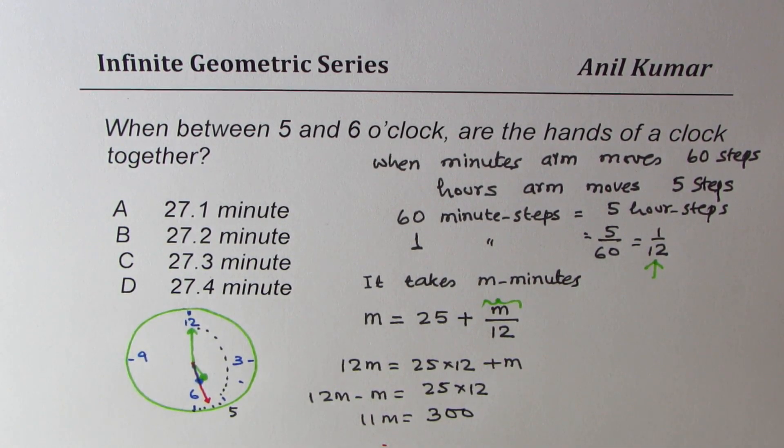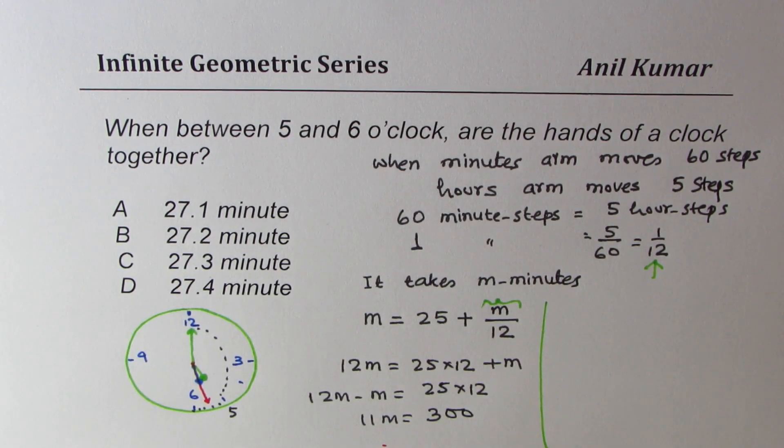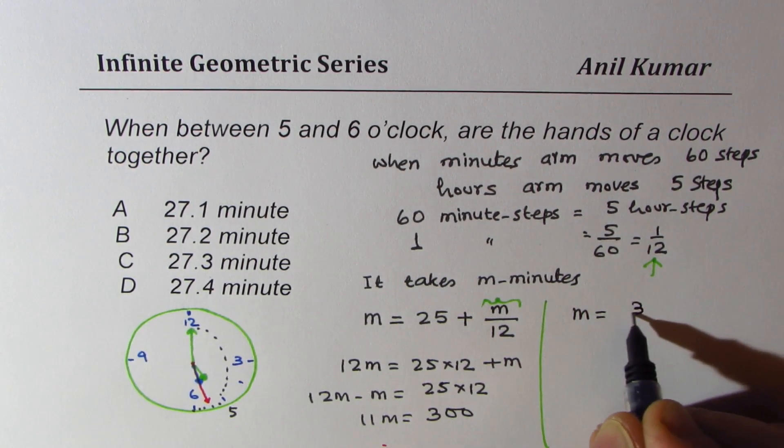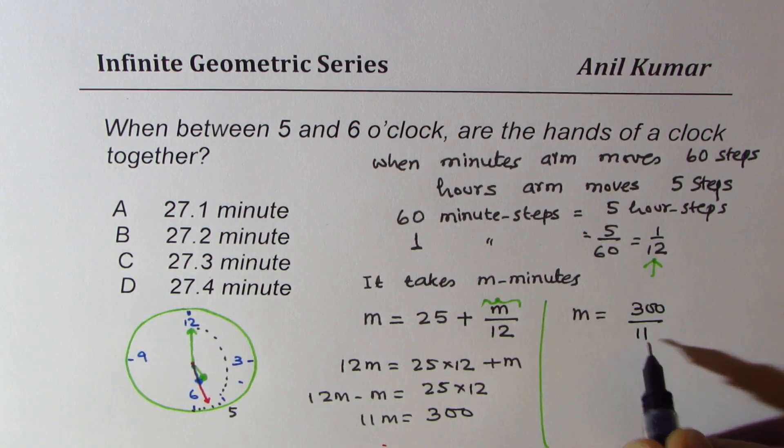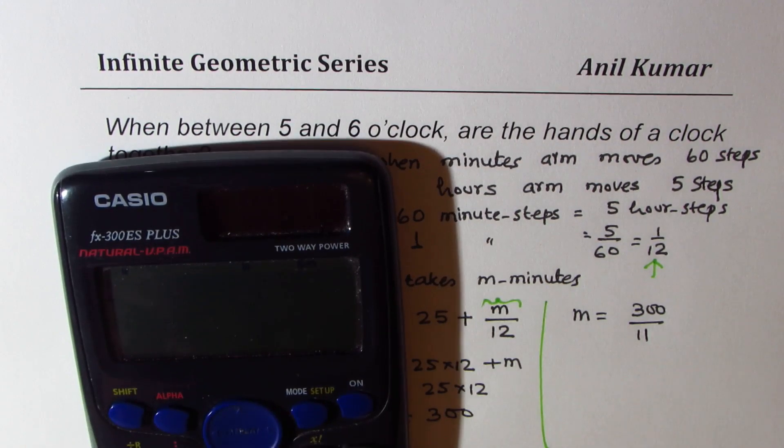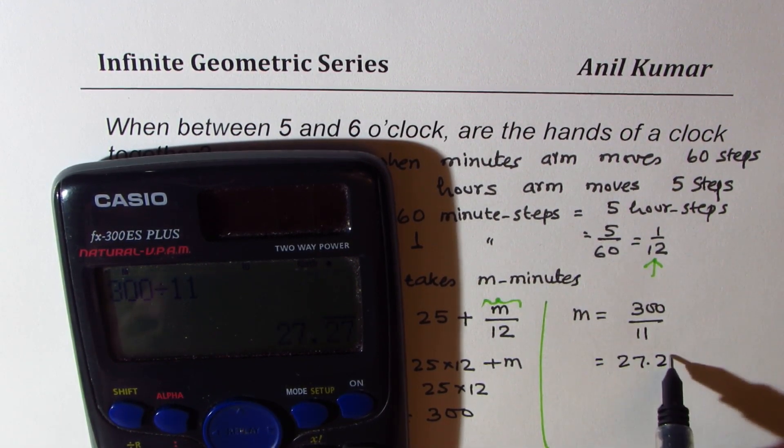Now from here we can calculate what m is. So we have m equals to 300 over 11. So let's use the calculator to get this value, or you could do long division if calculator is not allowed. So 300 divided by 11 gives you 27.27, and this could be rounded to 27.3.